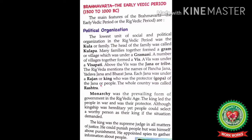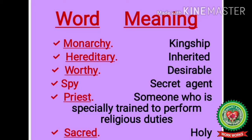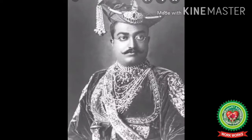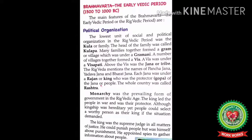Monarchy was the prevailing form of government in the Rig Vedic age. The king led the people in war and was their protector. Monarchy means kingship — it is a form of government in which supreme authority is in the hands of a single person. The king acted as the chief army official of the people, and it was his duty to protect his people.